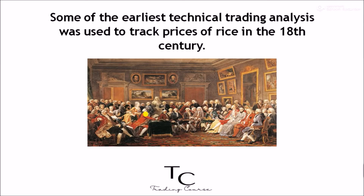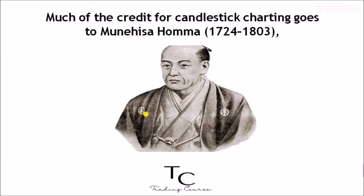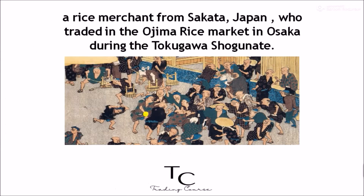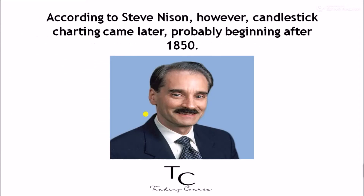Some of the earliest technical trading analysis was used to track prices of rice in the 18th century. Much of the credit for candlestick charting goes to Munehisa Homma, 1724–1803, a rice merchant from Sakata, Japan, who traded in the Ojima rice market in Osaka during the Tokugawa Shogunate. According to Steve Nissen, however, candlestick charting came later, probably beginning after 1850.